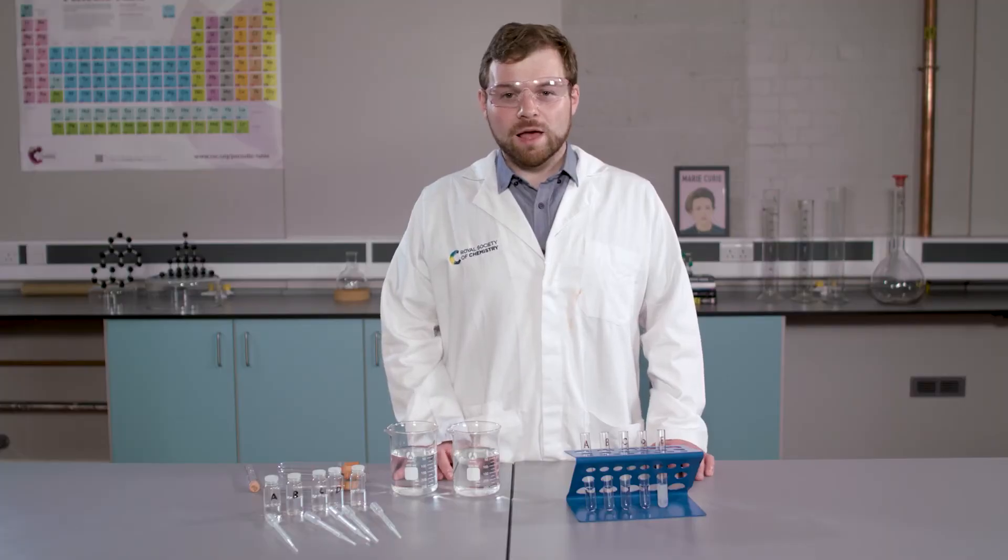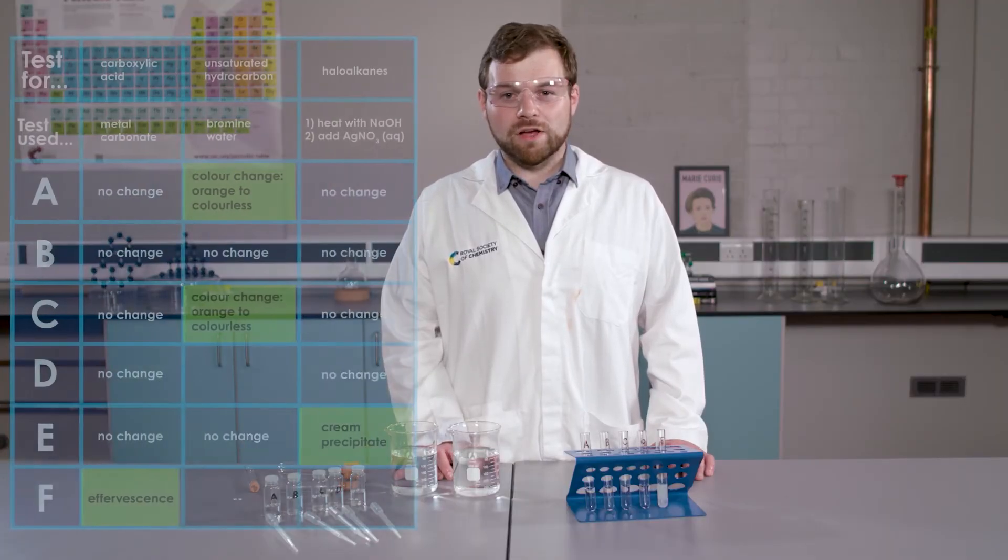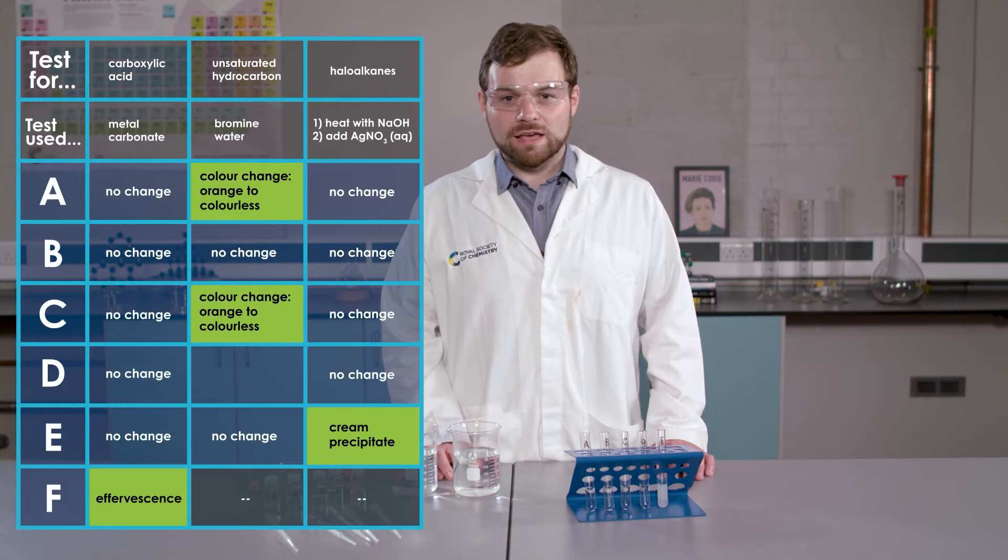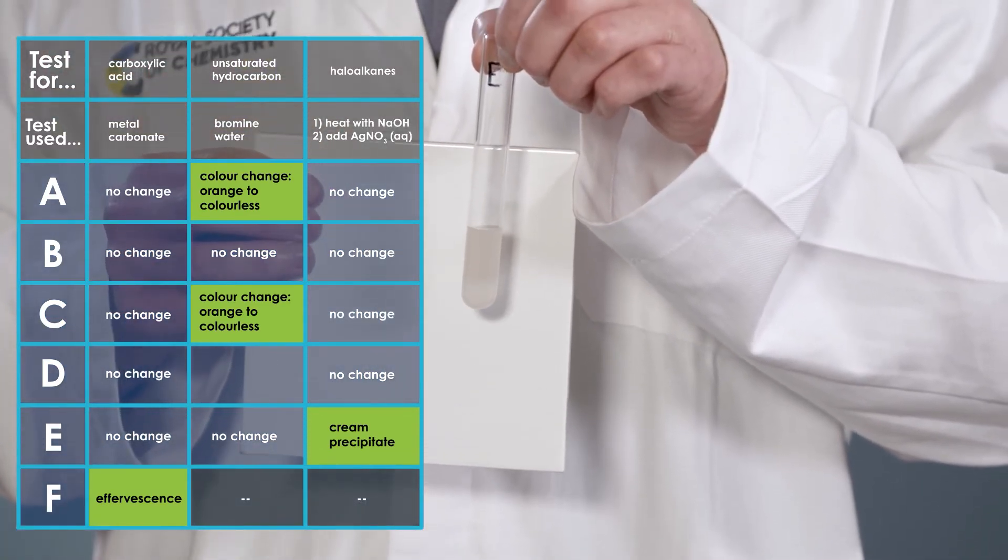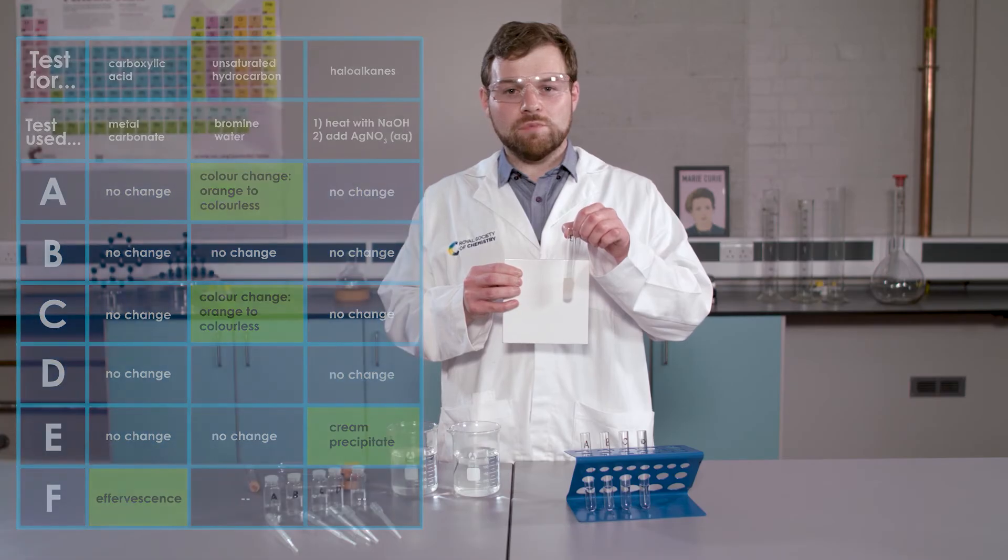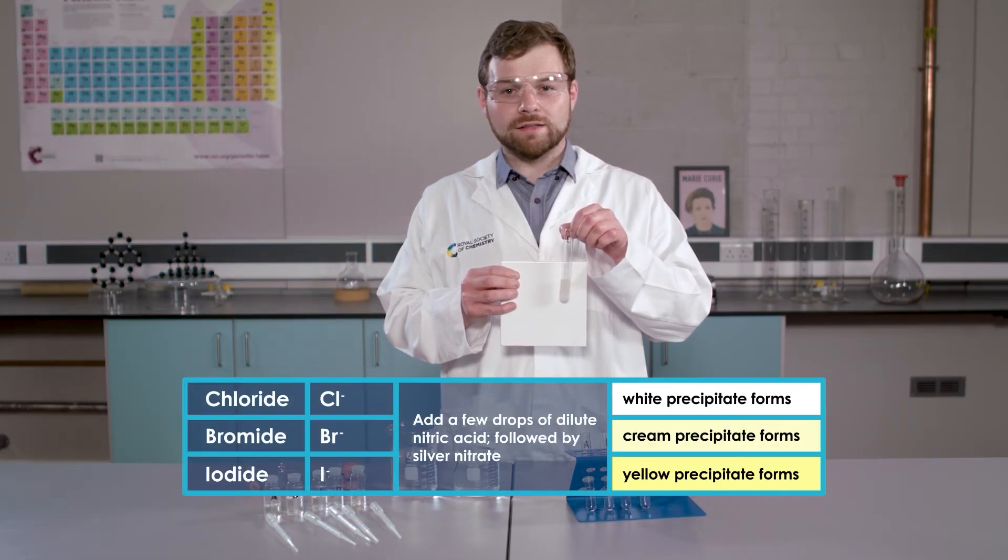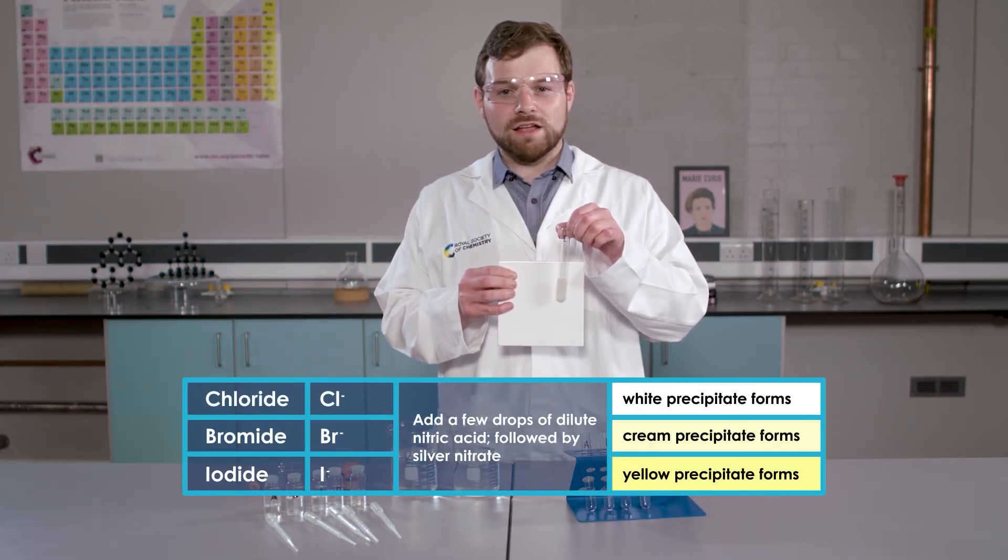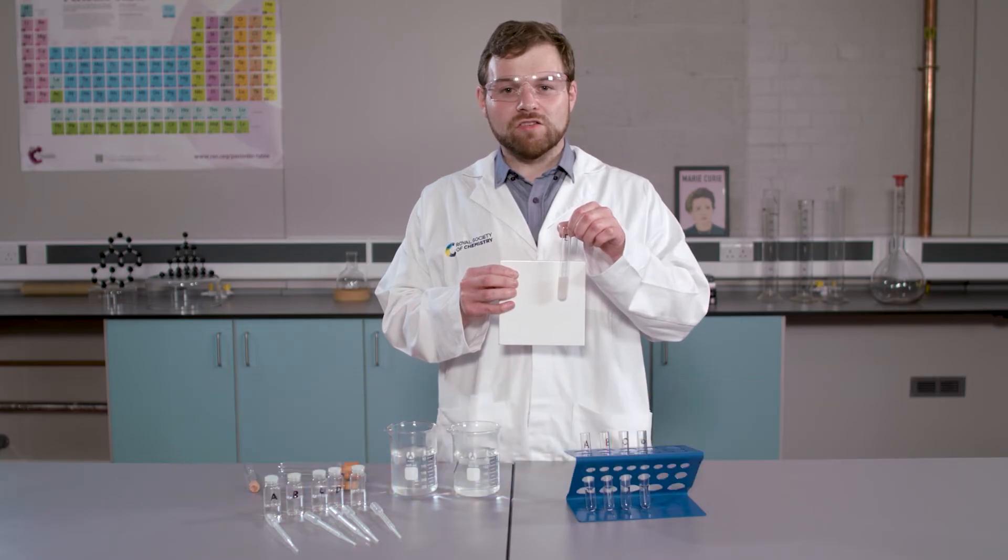As you can see, a precipitate has only been produced in one of our samples, sample E. The colour of the precipitate that has formed is cream. This indicates that sample E is actually a bromo alkane. If you need any help with identifying ions, click the link in the description.